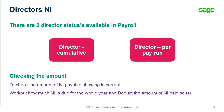There are two director statuses available in payroll, and whichever is selected, by the end of the year the overall NI contributions will be the same. Director Cumulative only starts calculating on annual earnings over the primary threshold (PT), meaning they may start the year with no NI contributions at all. Director Per Pay Run uses exact percentages like normal employees, but is not recommended for directors receiving a bonus during the year. In the final pay period, a recalculation is performed on the earnings to ensure the correct NI has been paid overall.